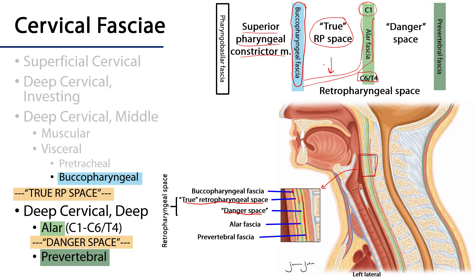If we go posterior to the alar fascia we're in the danger space — between the alar fascia and the prevertebral fascia. That danger space is completely contiguous from posterior here all the way down into the superior mediastinum of the thorax. This is a theoretical route through which infection can spread and metastases may spread between the neck and the retropharyngeal area down into the thorax.